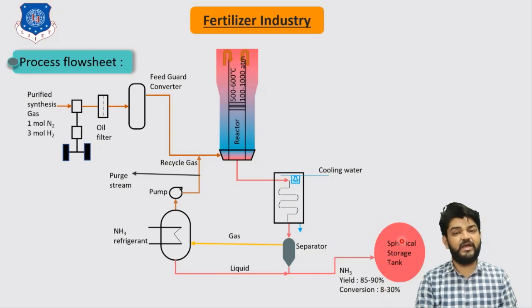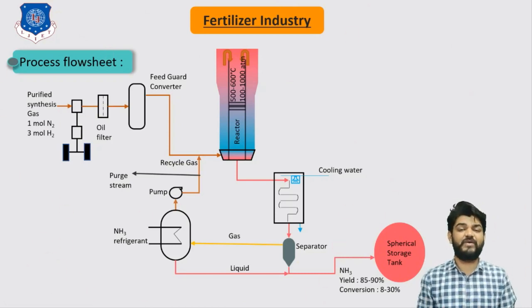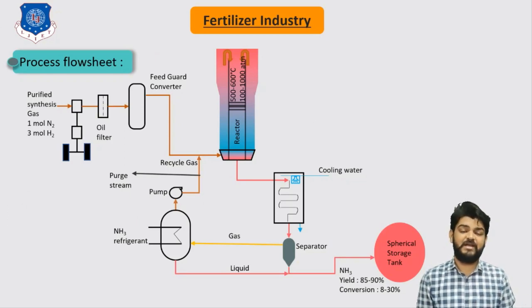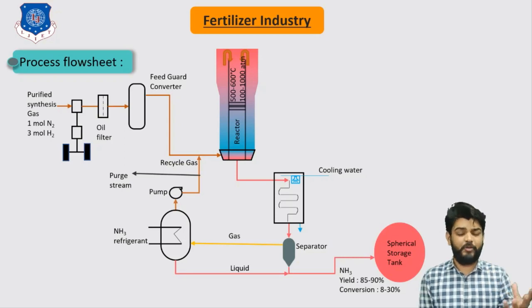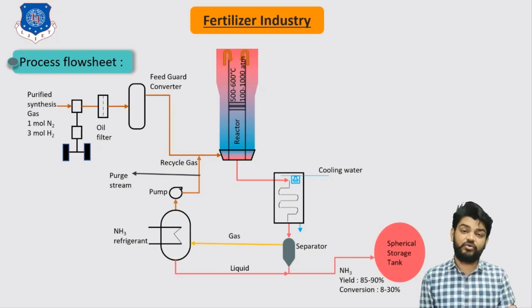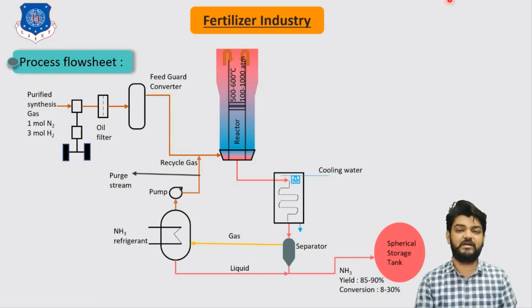Ammonia can be stored in spherical-type storage tanks. This entire flow sheet — covering raw materials, quantitative requirements, chemical reaction, flow sheet diagram, and process description — is important for a 7-mark question in the GTU exam, where the question may be asked as: 'Explain the manufacturing process of ammonia with flow sheet.'